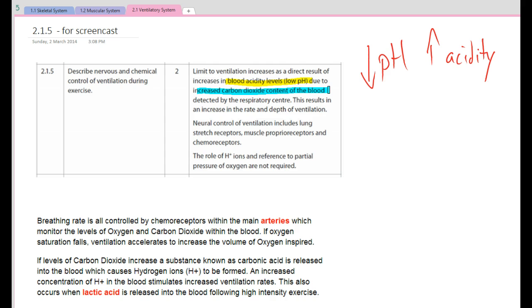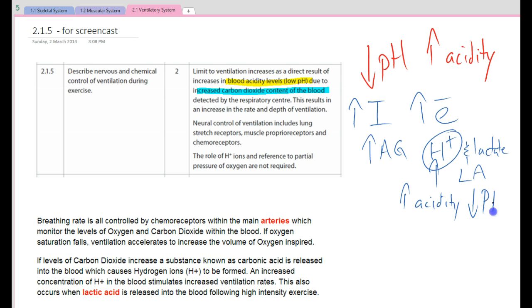Now when we do physical activity, the higher the intensity, the greater the amount of energy that's required and the greater the reliance on the anaerobic glycolysis energy system. A by-product of this system is hydrogen ions and lactate which together form lactic acid. So as our hydrogen ions increase, we have an increase in acidity or a decrease in pH. The greater the level of activity with respect to intensity, the lower the pH.